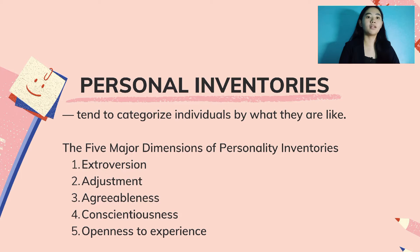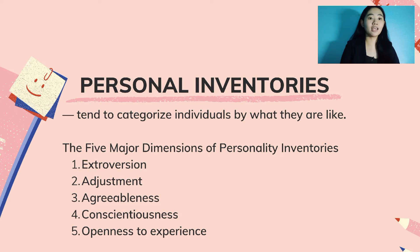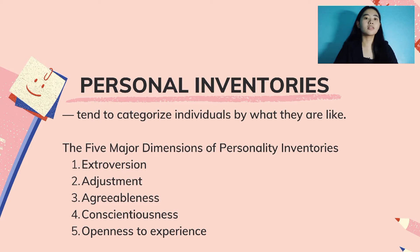Personal Inventories tend to categorize people based on what kind of personality they have. There are five major dimensions: Extroversion — people who are sociable, talkative, and expressive; Adjustment — people who are emotionally stable, secure, and content; Agreeableness — people who are good-natured, trusting, and cooperative; Conscientiousness — people who are dependable, organized, and achievement-oriented; and Openness to Experience — people who are curious, imaginative, and open-minded.